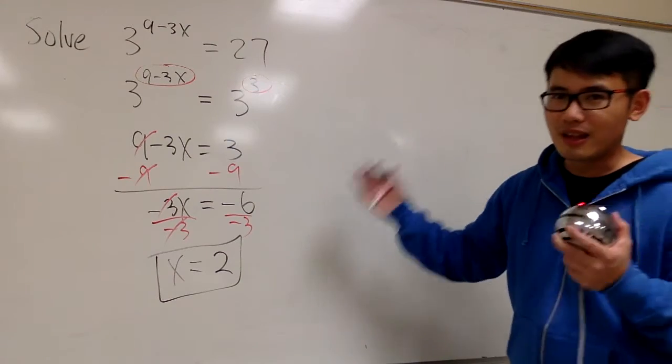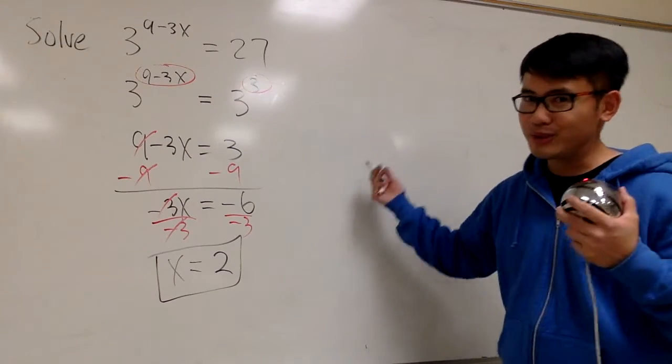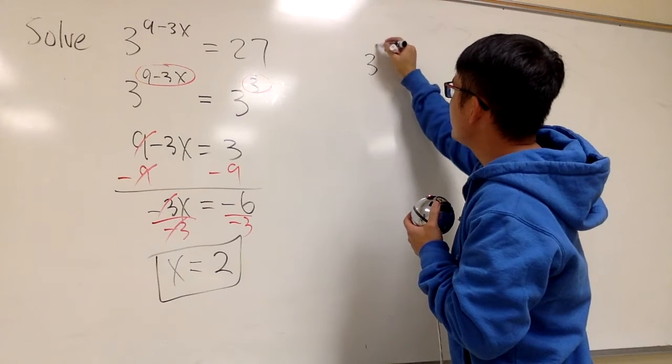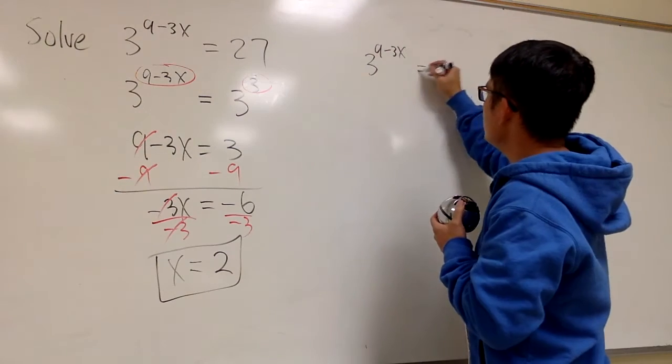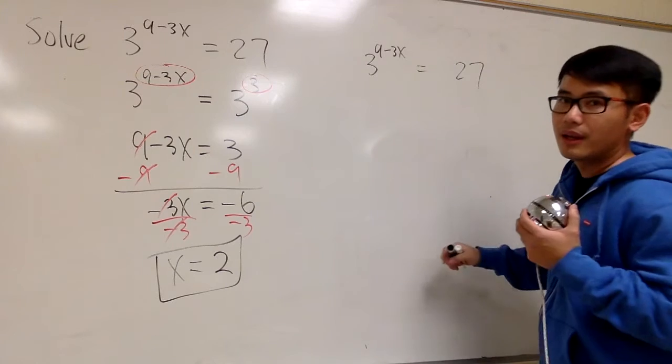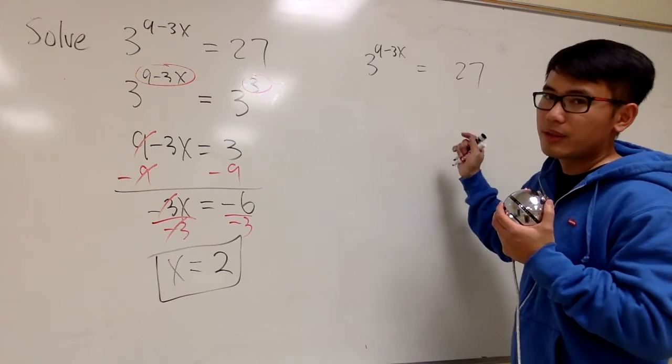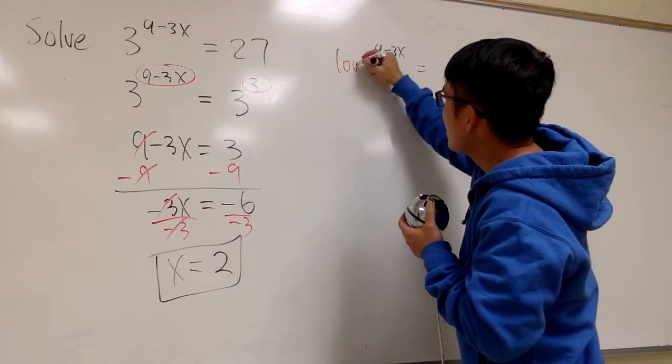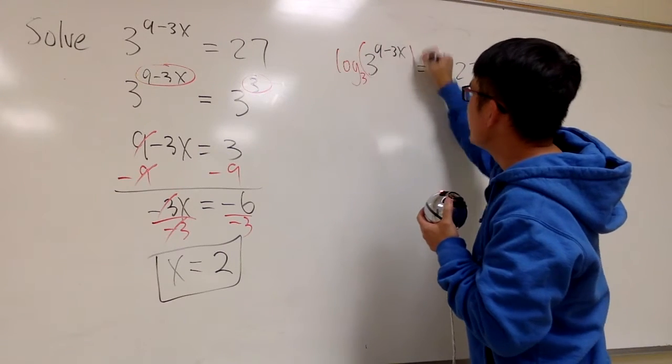If you want to see how to use the log on both sides, I'll show you that real quick as well. So another way to do it: 3 raised to 9 minus 3x, this is equal to 27. The x is in the exponent, the base right here is 3. What I want to do is I will take the log with base 3 on both sides, like that.